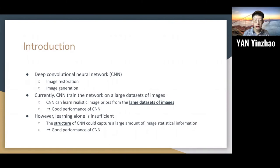Deep Convolutional Neural Network, also called CNN, has been widely used in image restoration and image generation. Currently, CNN trains the network on a large dataset of images, so one may assume that CNN can learn realistic image priors from the large datasets of images, and it is the reason why CNN could achieve good performance. But actually, it is wrong. Instead, learning alone is insufficient. The structure of CNN could capture a large amount of image statistical information, and it is the reason why CNN could achieve good performance.